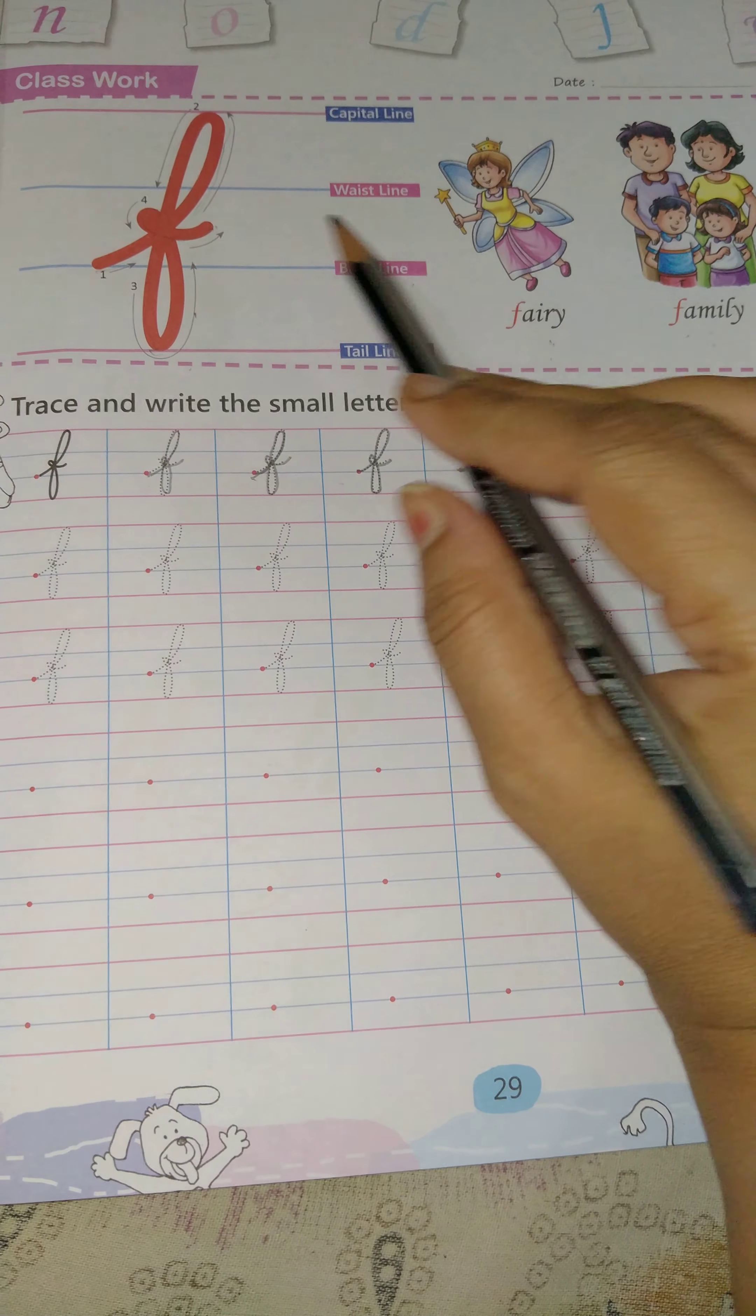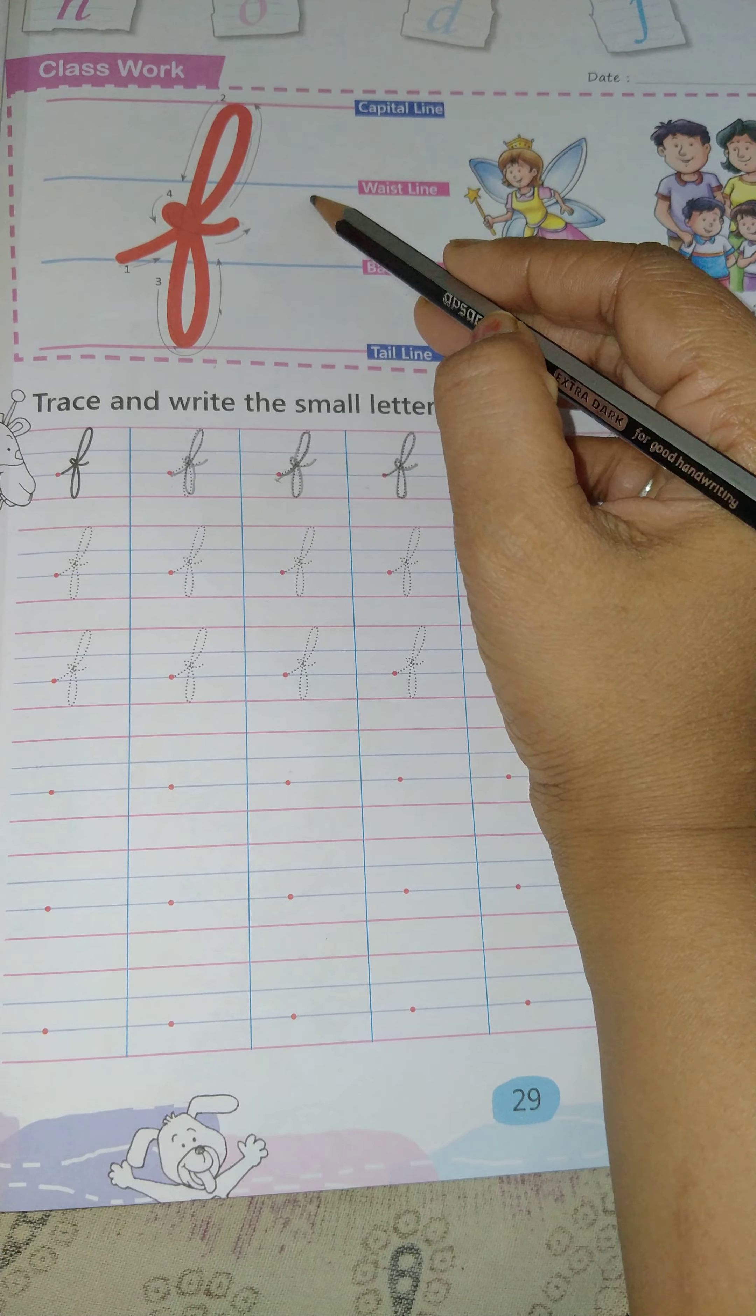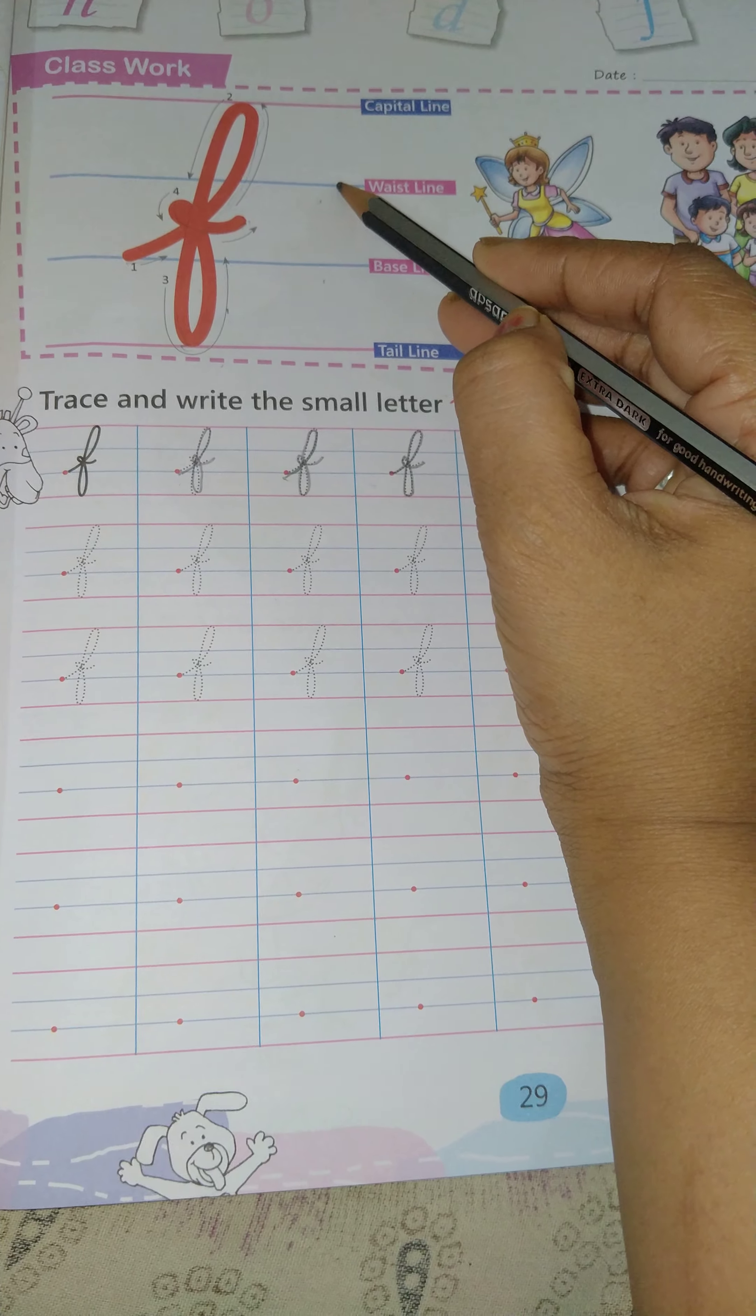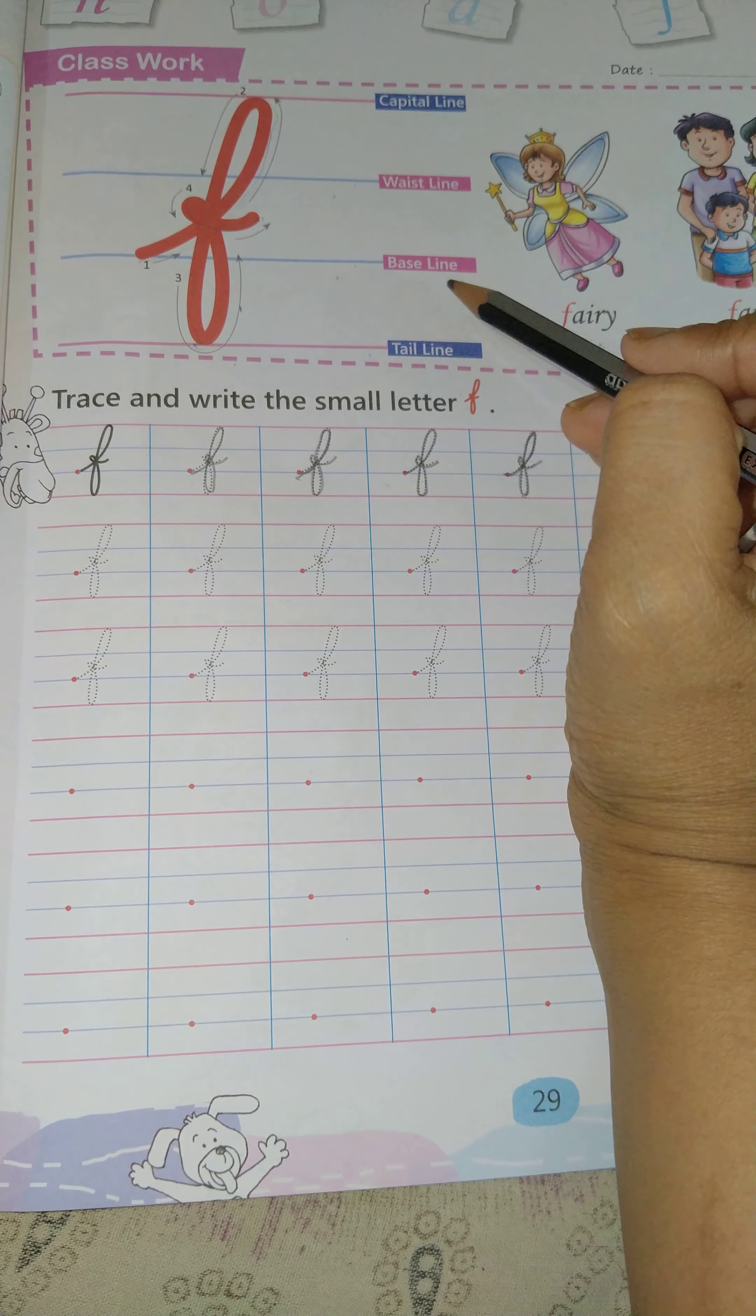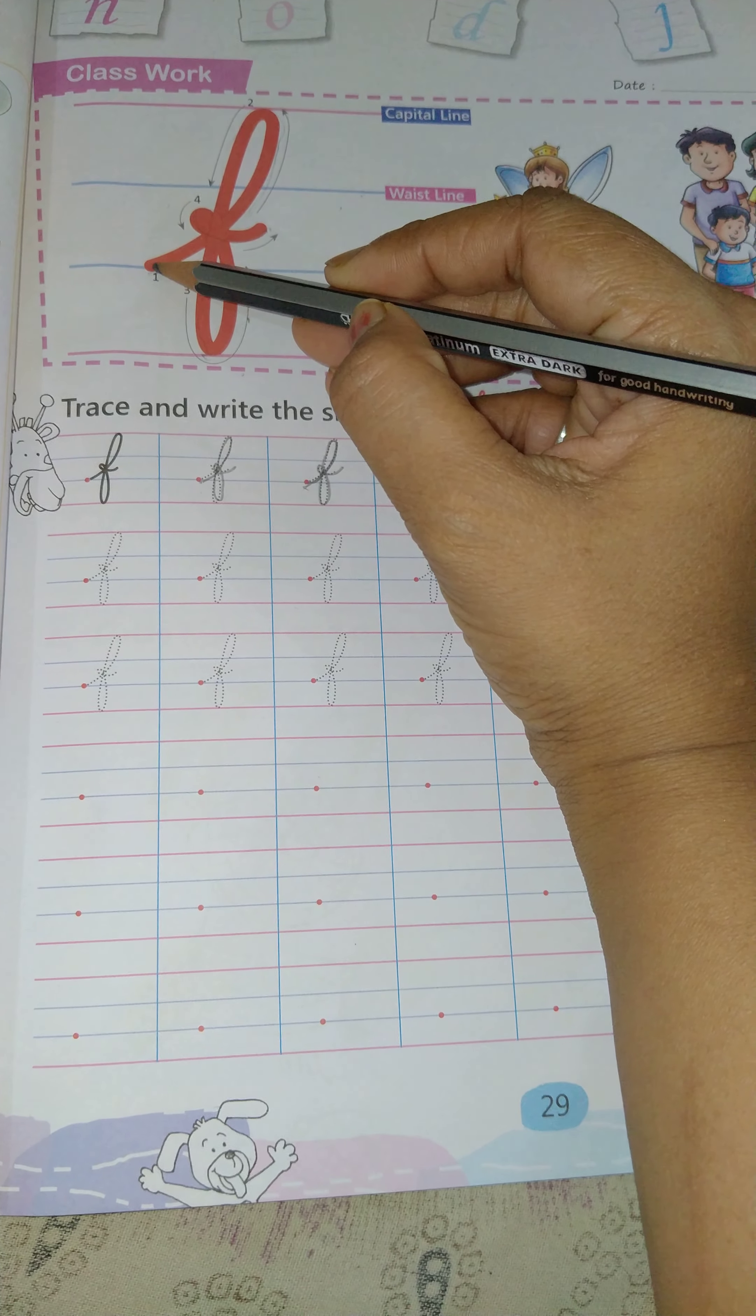From where we will start F? You have four lines: one, two, three, four. First line is capital line. Second line is waistline. Third line is baseline. Fourth line is tail line. We will start from baseline, the third line. One, two, three. Start.